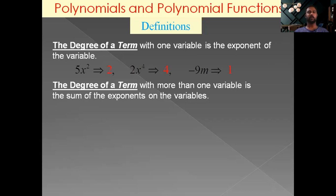The degree of a term with more than one variable is the sum of the exponents of all variables. For example, minus 7x square y has two variables: power of x is 2 and power of y is 1, giving a total degree of 2 plus 1, that is 3. For 2x to the power 4 y square, the degree is 4 plus 2, that is 6.